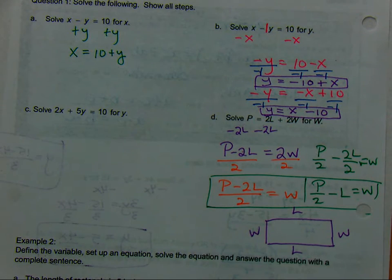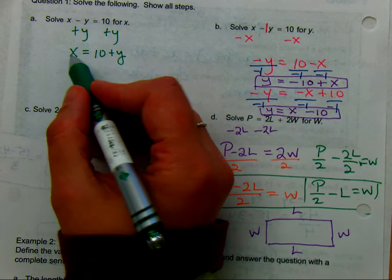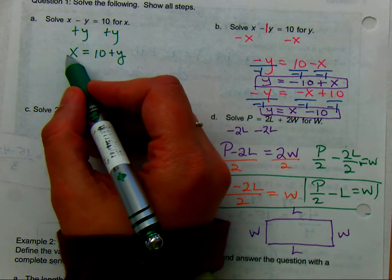Did you get X by itself? Do you have to divide by anything? Why not? Because you have, how many X's do you have? 1X.